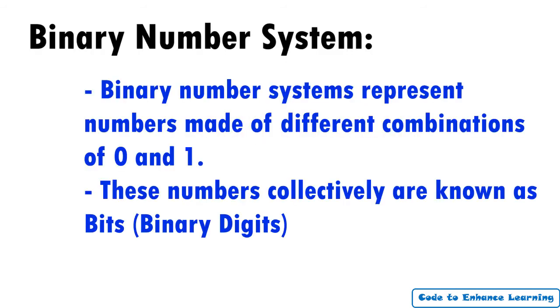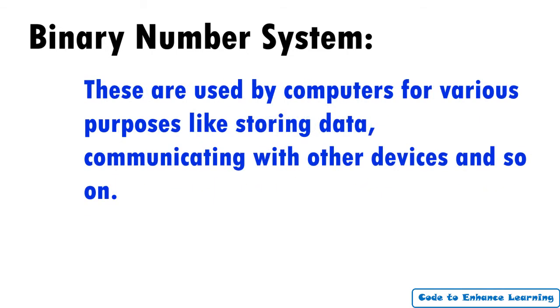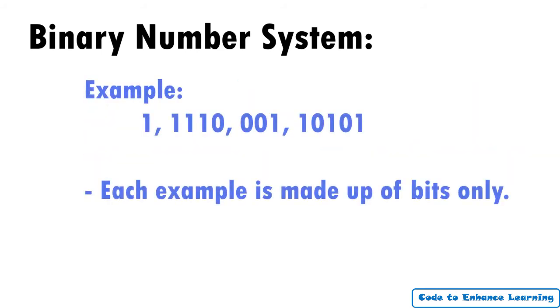Secondly, we have a binary number system. Binary number systems represent numbers made of different combinations of 0s and 1s. These numbers collectively are known as bits, binary digits. These are used by computers for various purposes like storing data, communicating with other devices and so on. Few examples of binary numbers are shown on the screen. Each example is made of bits only.